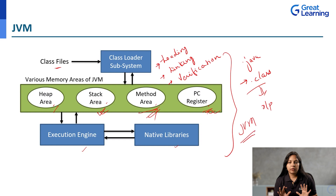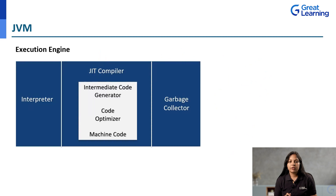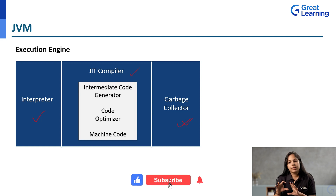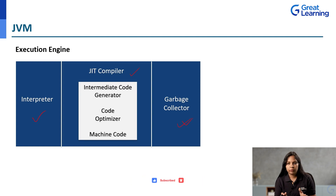Now talking about the execution engine in a little more detail. The execution engine consists of the interpreter, JIT compiler, and garbage collector. The garbage collector is used for allocation and deallocation of memory of variables or objects. Garbage collection is done automatically in Java — as a developer or programmer you don't write anything related to it, and it is present in the execution engine of JVM.